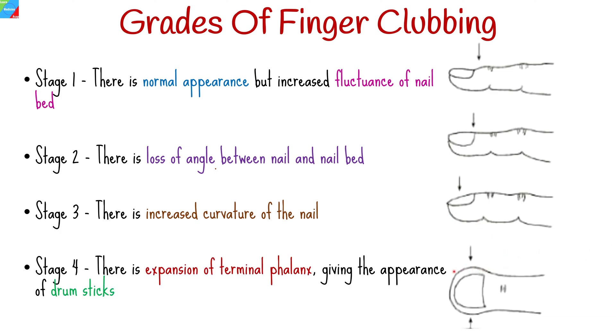In stage four, there is expansion of the terminal phalanx giving the appearance of drumsticks. There are several approaches to treating the underlying causes of clubbing. Your treatment will be determined by your underlying condition.